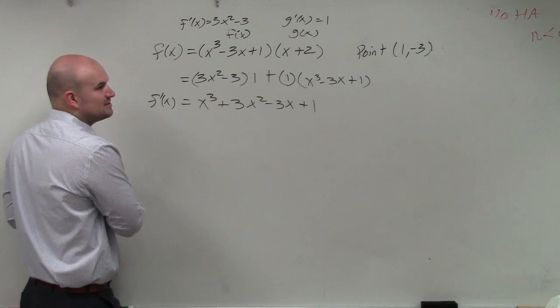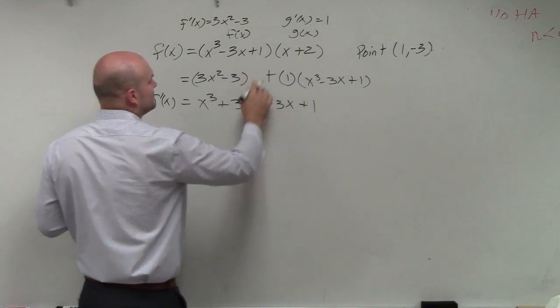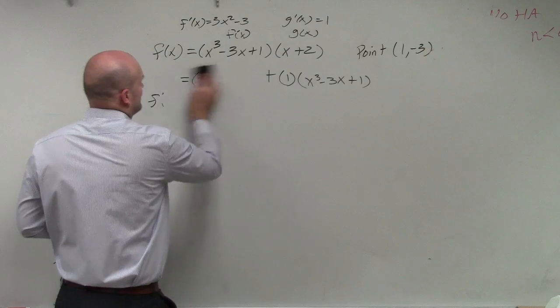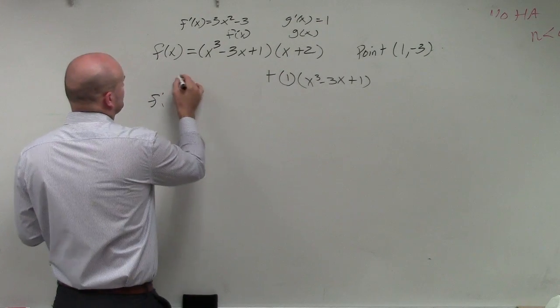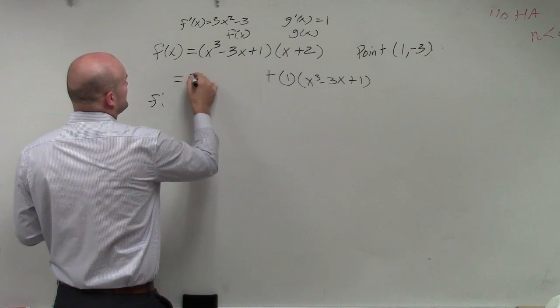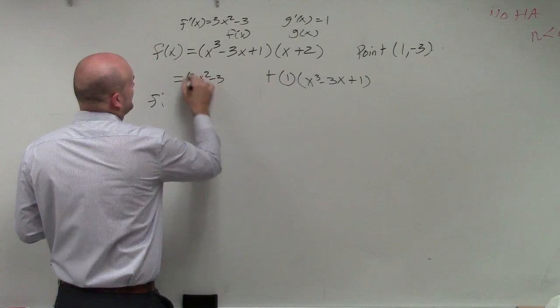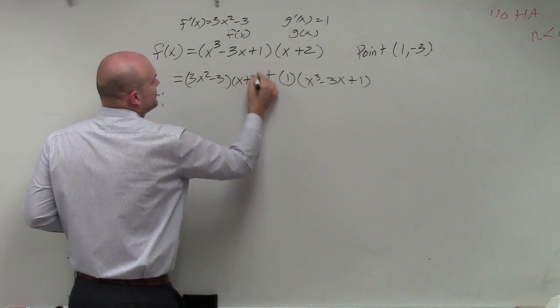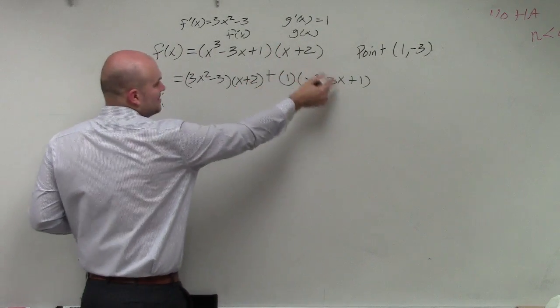There is one of them supposed to be x plus 2. This one's supposed to be x plus 2. Thank you. I wrote it in, f prime of x, 3x squared minus 3 times g of x. I was looking at that. So x plus 2 times g prime of x times f of x.